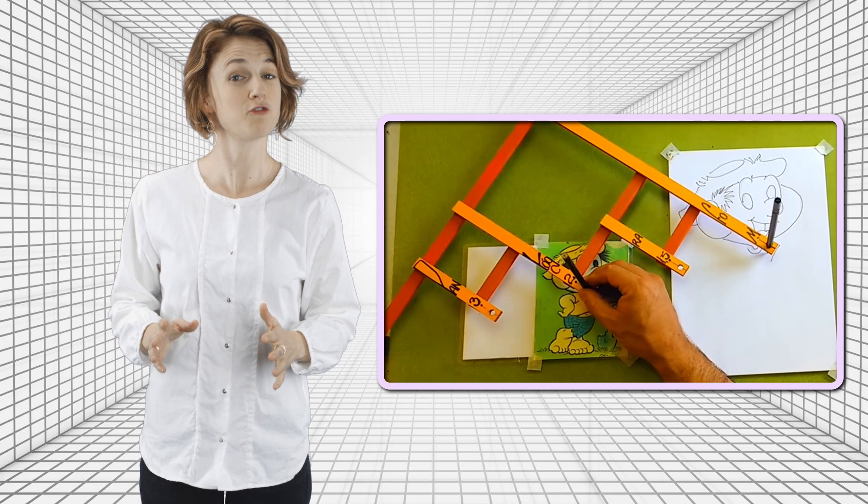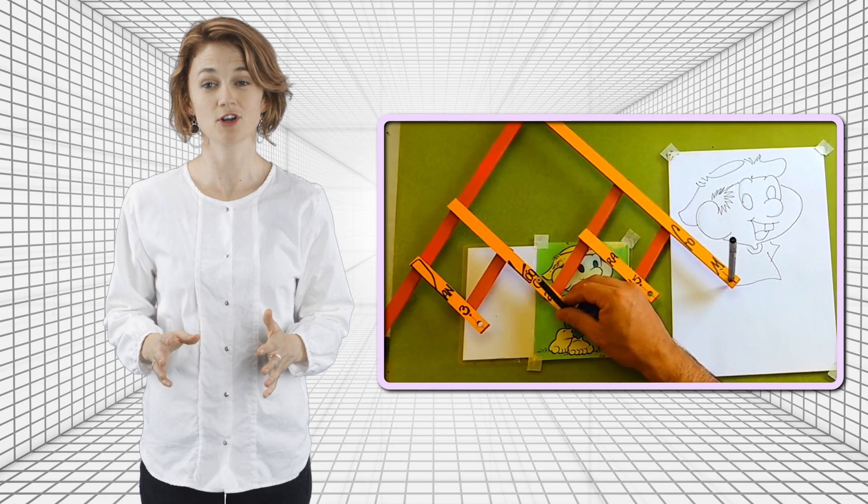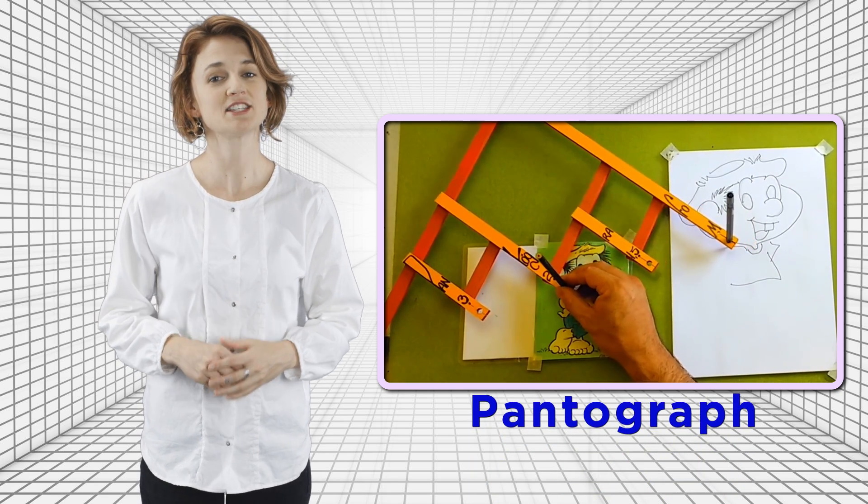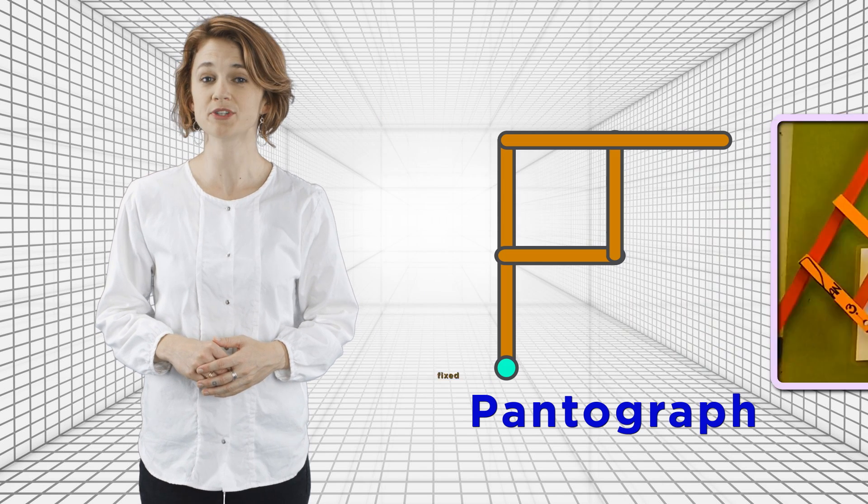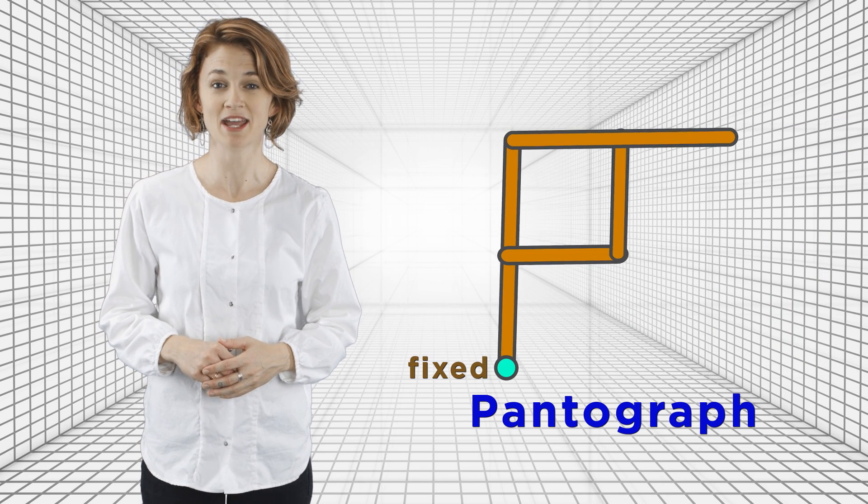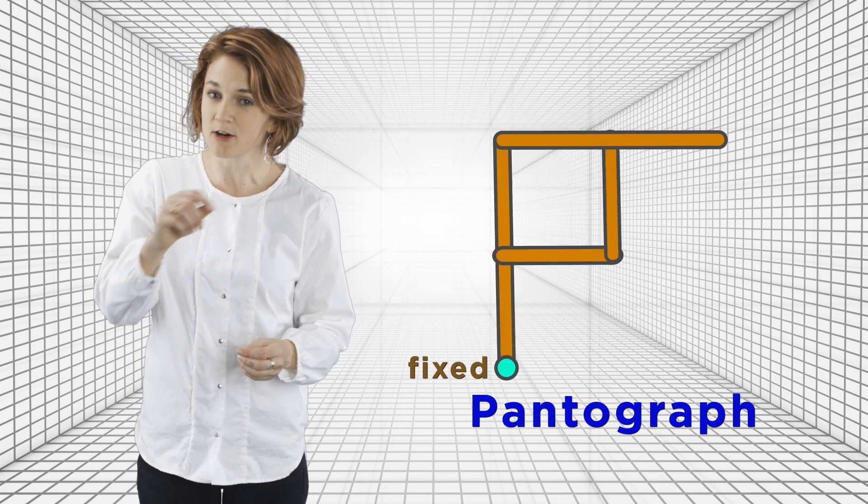This is a 400-year-old drawing tool called a pantograph. It's a mechanical device used to scale things, like drawings or maps. You hold it fixed at this end and then expand or contract and rotate it around a point.